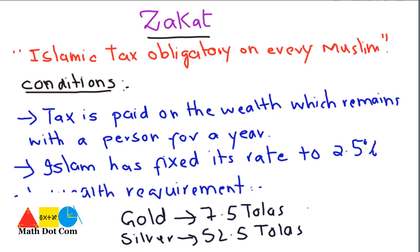Otherwise, you don't need to pay zakat. This minimum requirement is called Nisab — Muslims call it Nisab. That is the minimum wealth that should be with you for a year for zakat to be applicable. It is obligatory for Muslims if they are having wealth equal to 7.5 tolas of gold or 52.5 tolas of silver for a year, then they are eligible to pay the zakat.